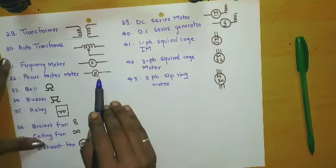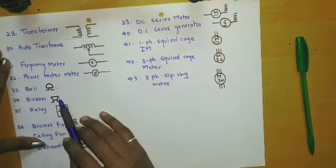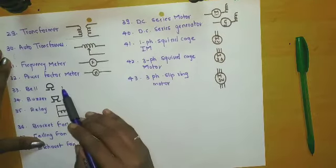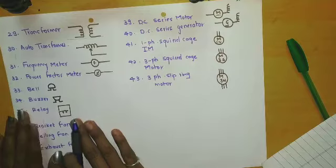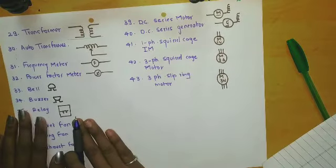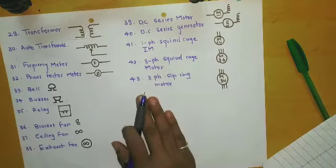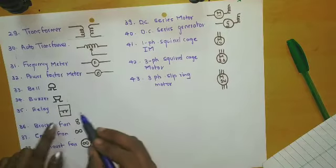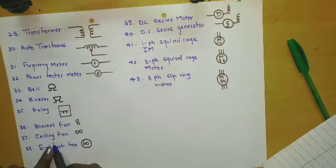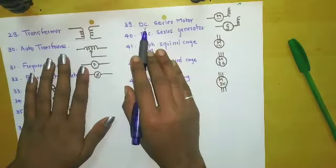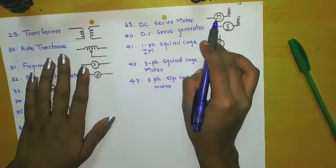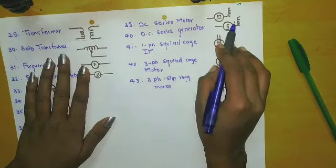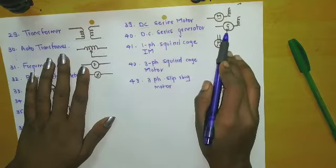Power factor meter — this is phi. Bell and buzzer — these are the symbols for bell and buzzer. Relay is an electromagnetic switch used to turn on or off a circuit by a low power signal, and this is its symbol. Bracket fan and ceiling fan — these are the symbols. Exhaust fan. DC series motor — we draw one straight line for DC and M for motor, and this is the symbol of DC series motor. DC series generator — this is the symbol.